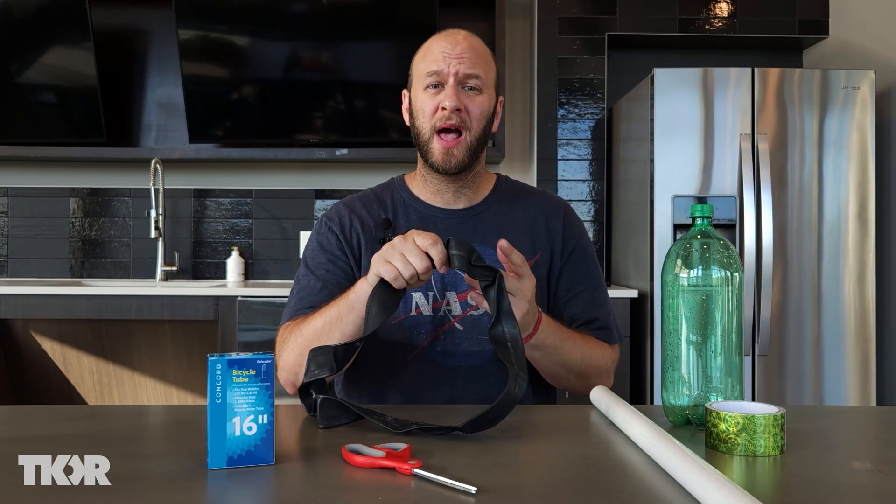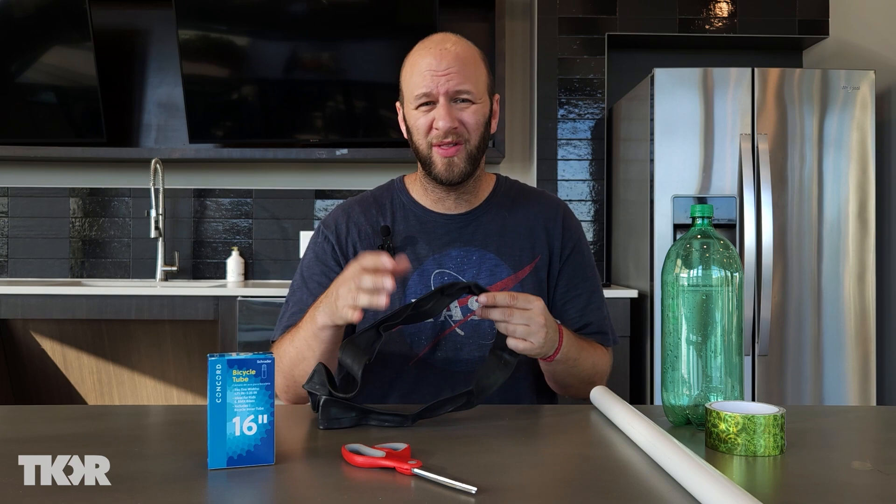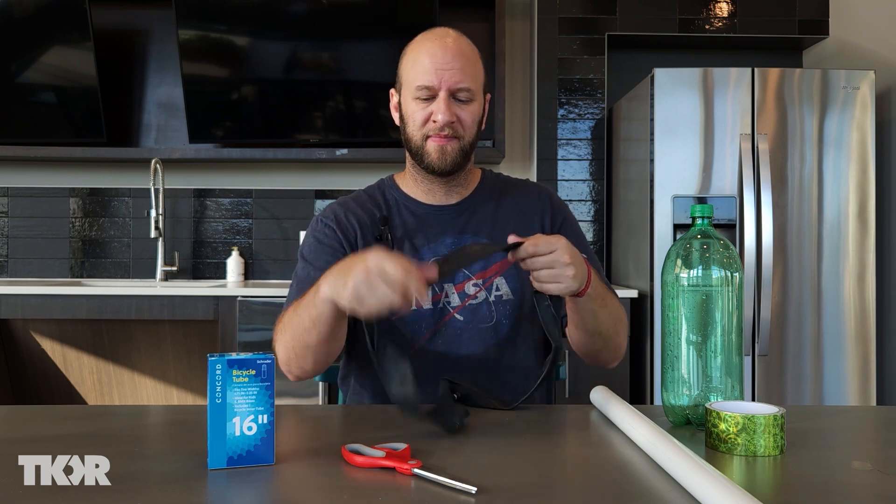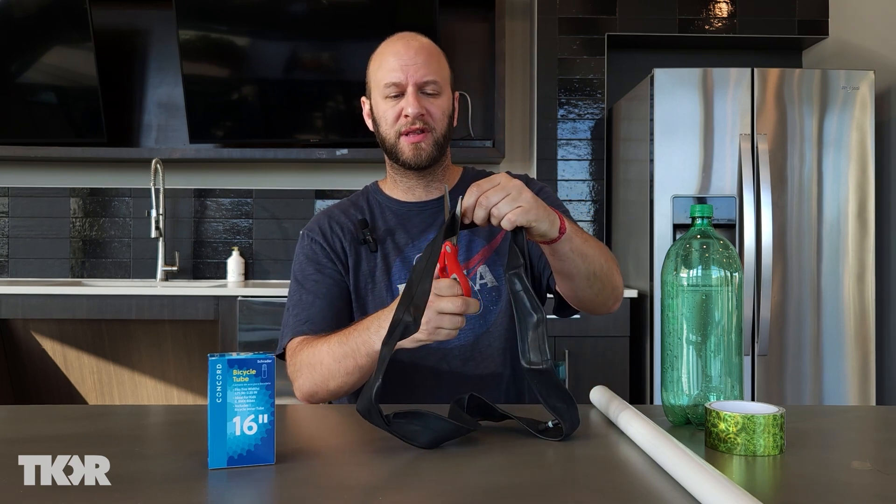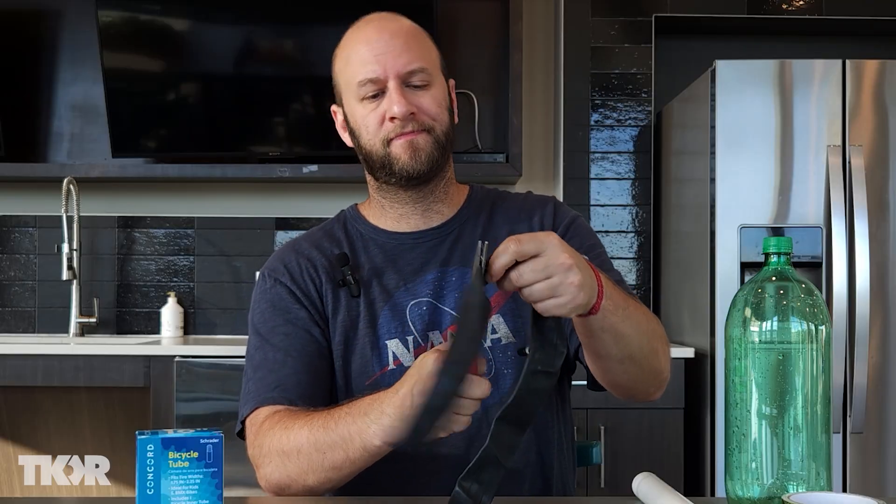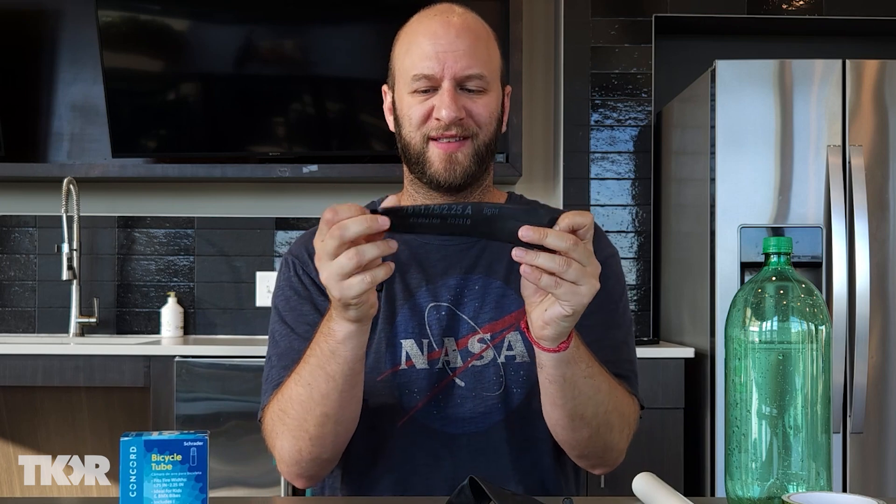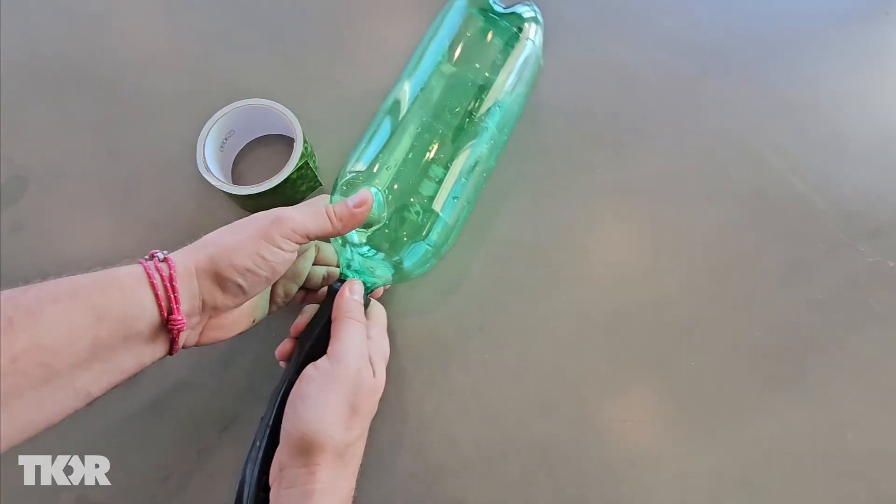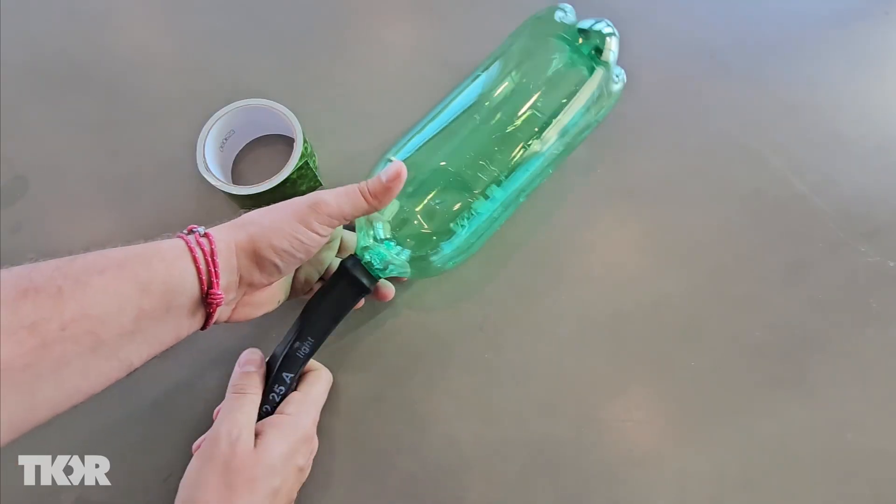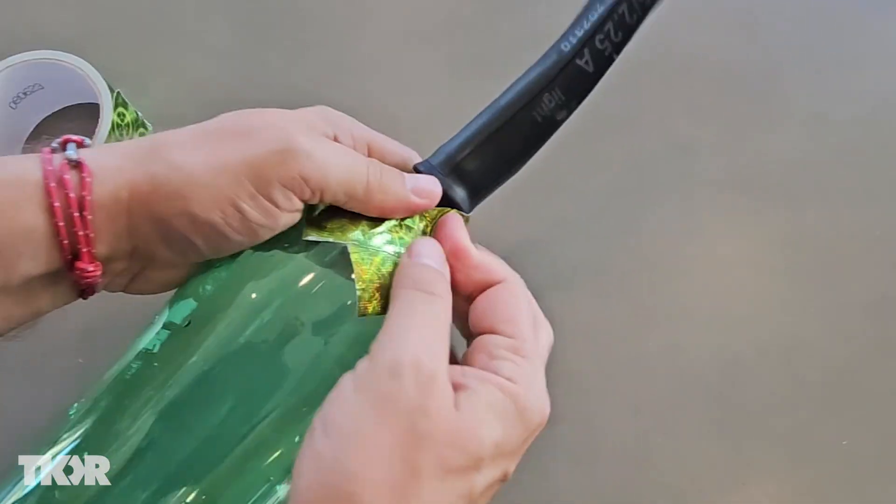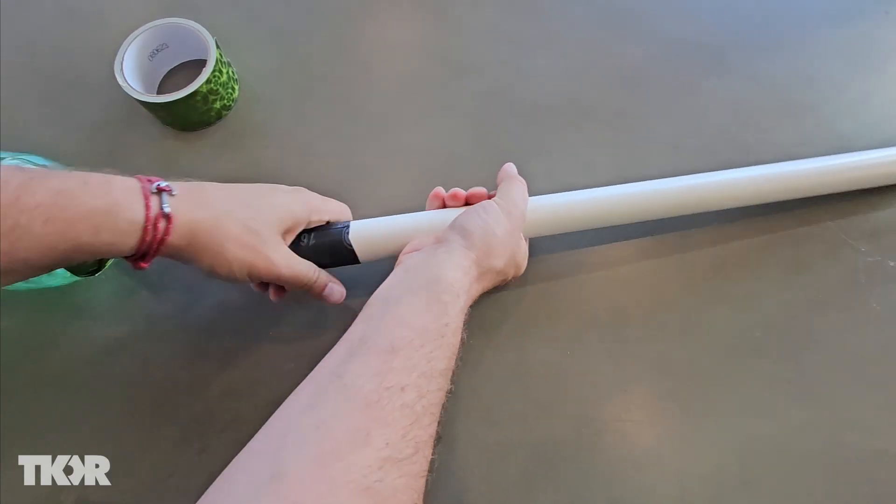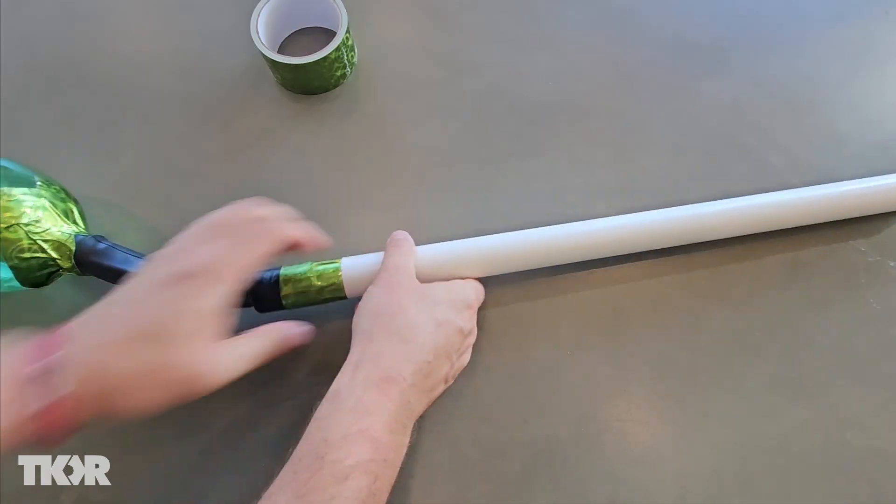The first step is to cut a piece of tire tube about four to eight inches long. Take your scissors and make a cut and another cut. Next, take one end of the tube and fit it around the top of your bottle and secure it in place with duct tape. Then take the other end and fit it around your PVC pipe and secure that in place with duct tape.